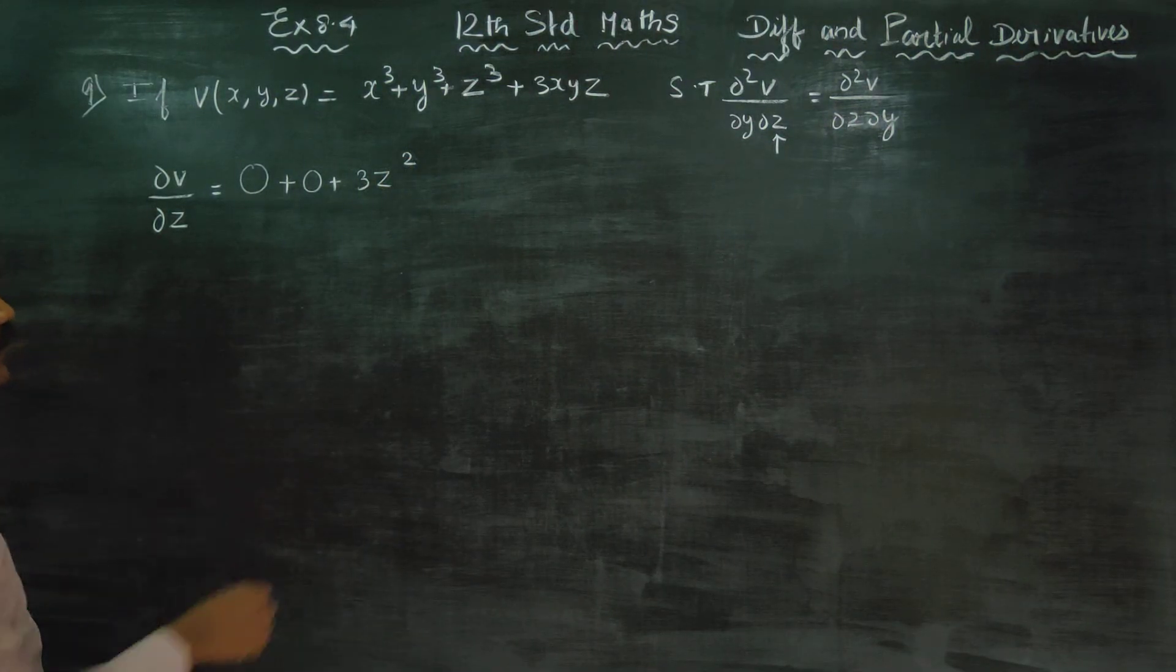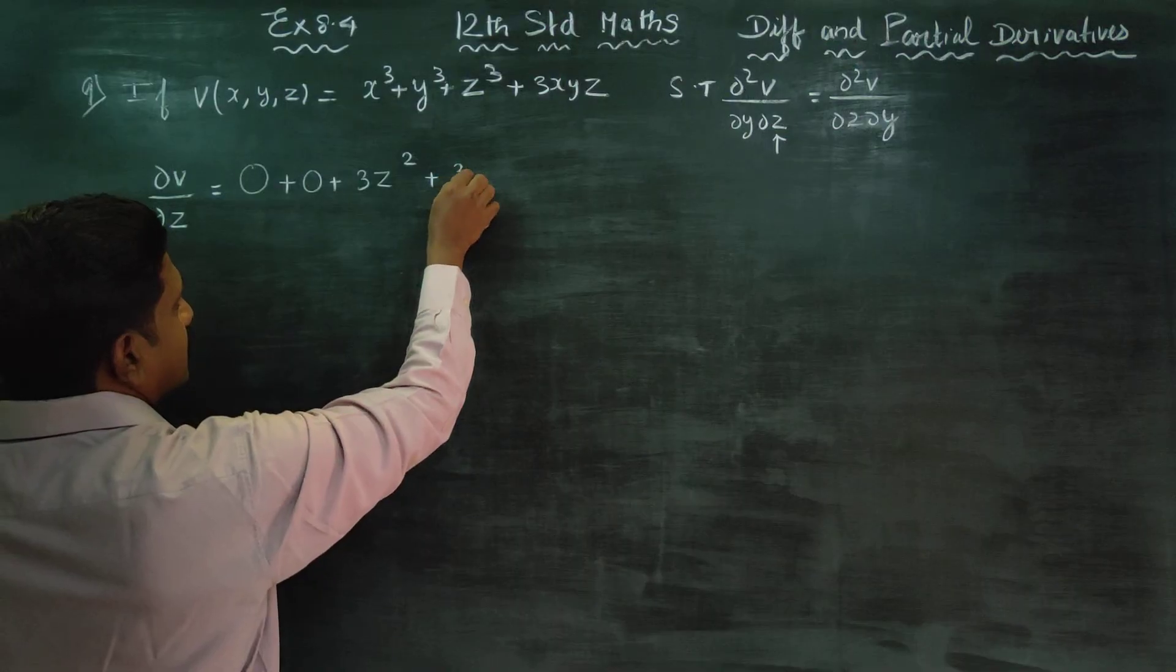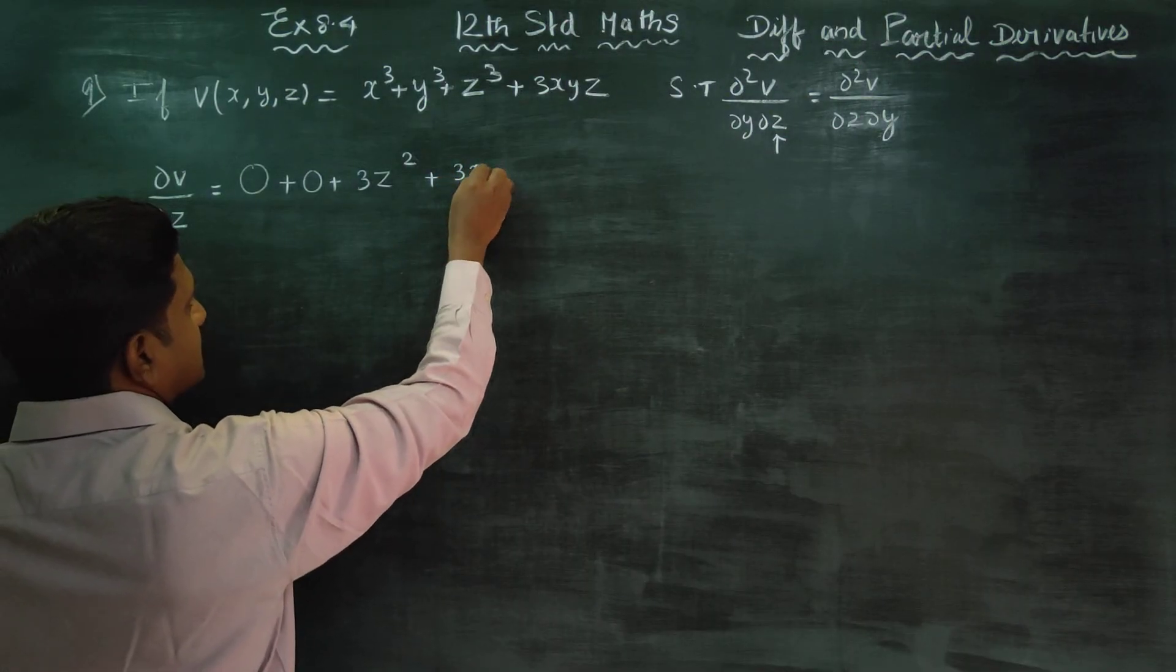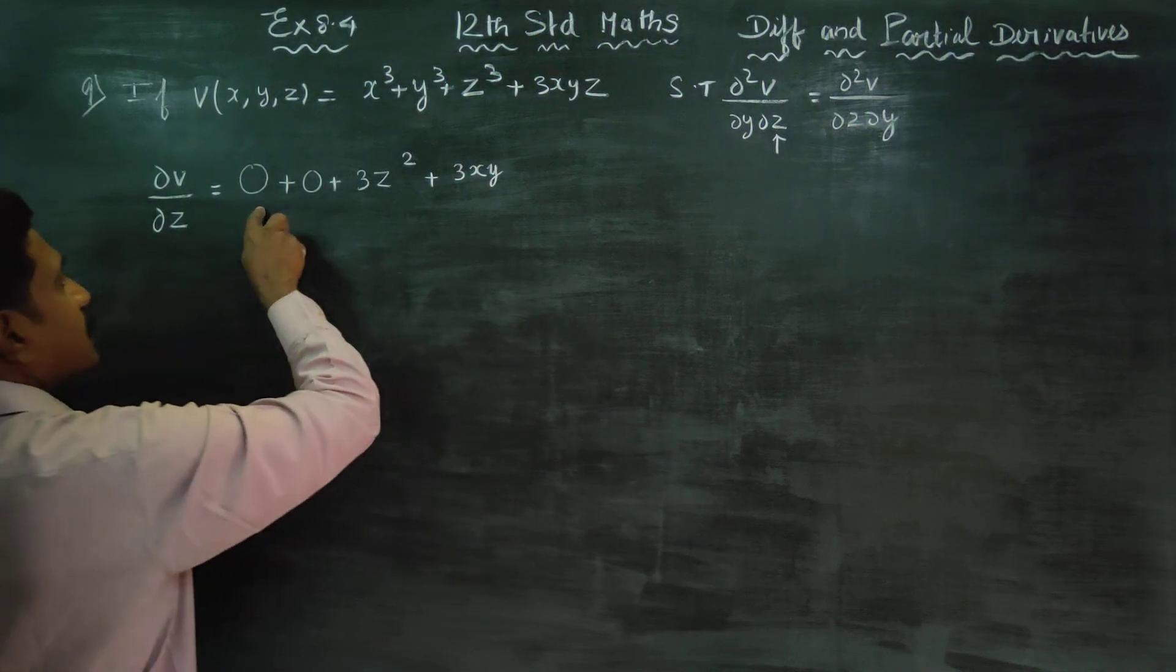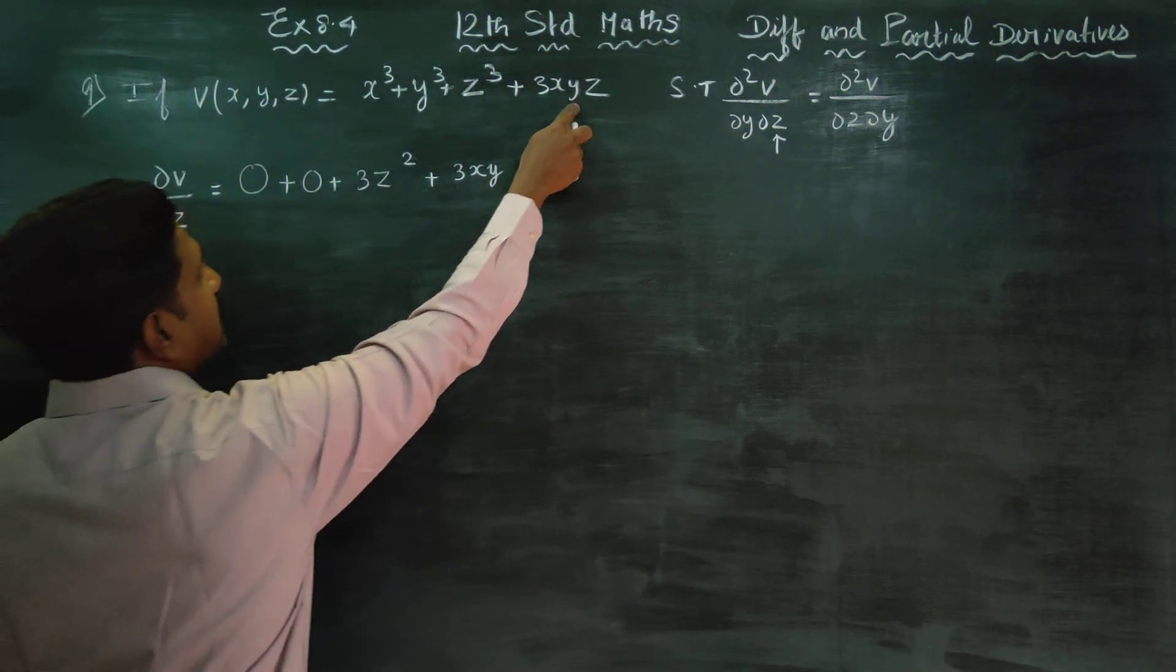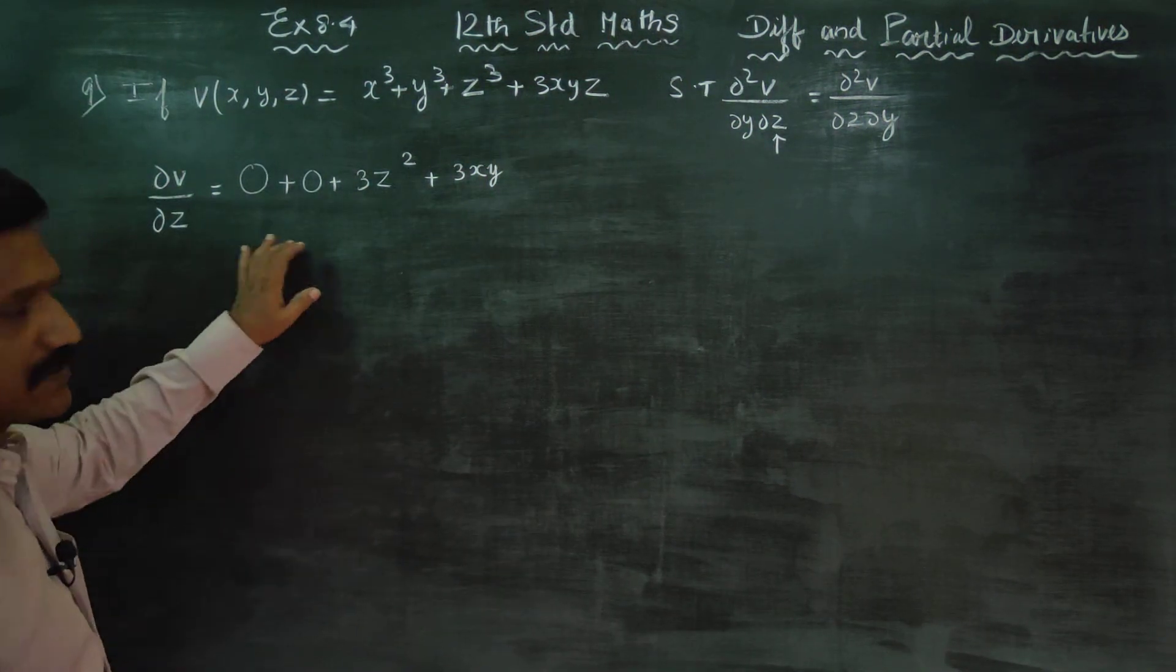3, 1, 2. Plus 3 is a constant, x is a constant, y is a constant. In the middle of zero, this is multiplication. Multiplication vanishes. Separately it becomes zero.